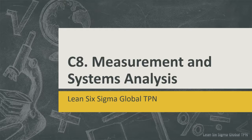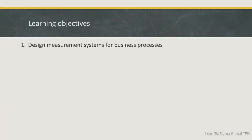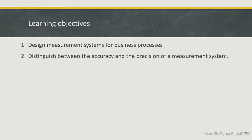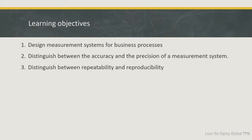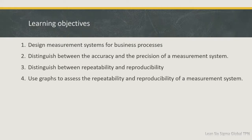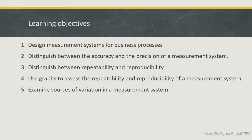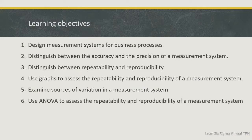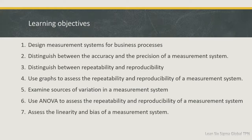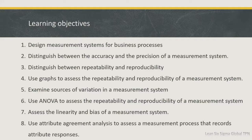Here are the concepts we'll be learning in this chapter. Design measurement system for business processes. Distinguish between the accuracy and precision of measurement system. Distinguish between repeatability and reproducibility. Use graphs to assess the repeatability and reproducibility of a measurement system. We examine sources of variation in a measurement system. We use ANOVA to assess repeatability and reproducibility. Access the linearity and bias of a measurement system. And we use attribute agreement analysis to assess a measurement process that records attribute responses.